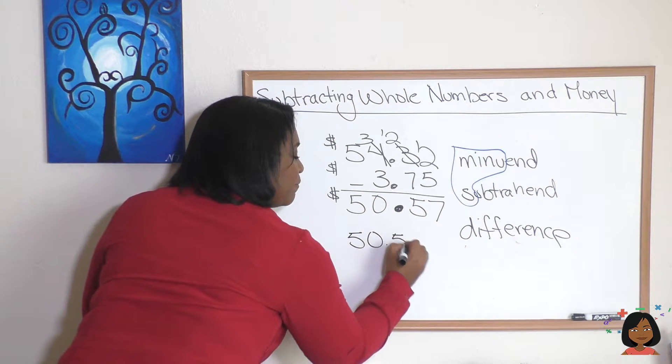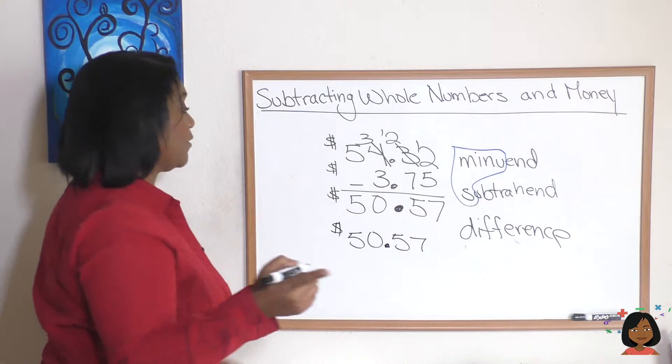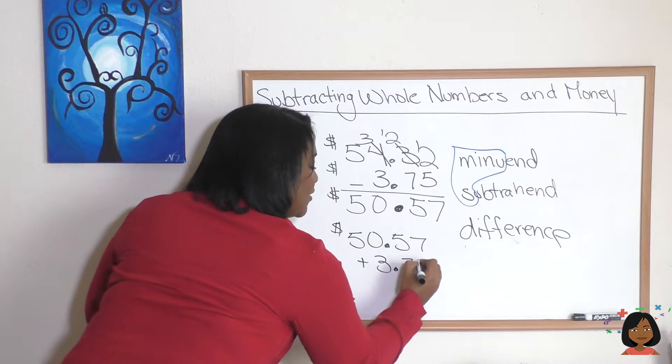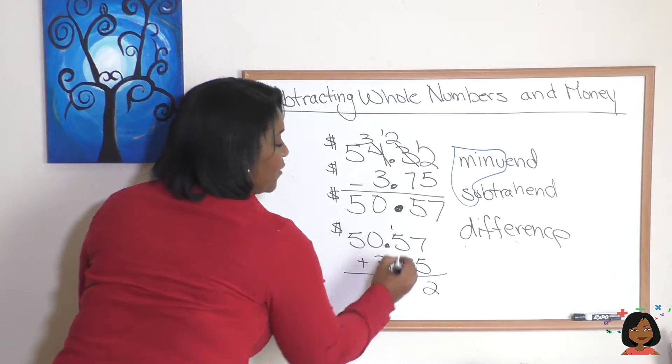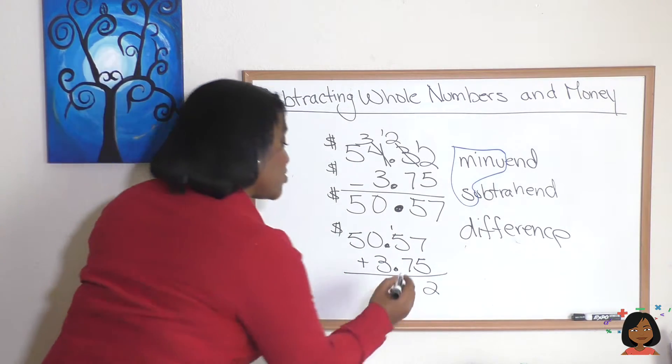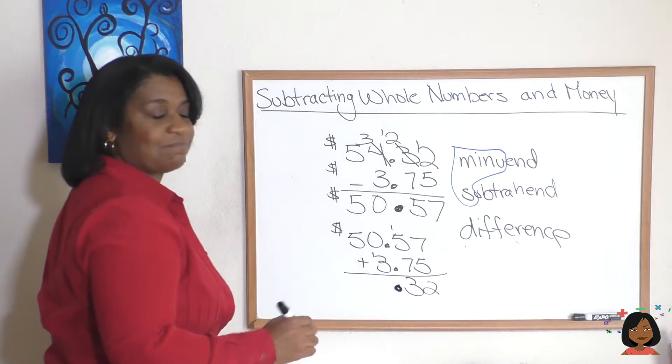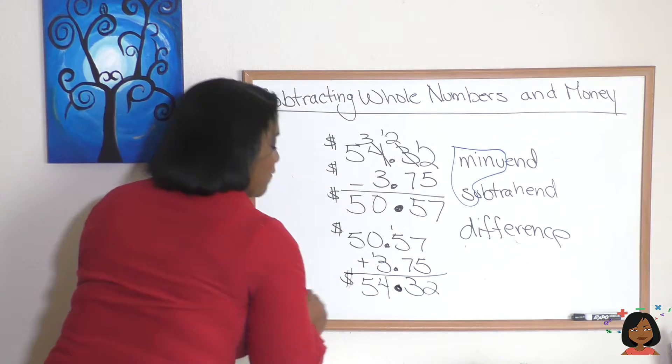I'm gonna rewrite my problem down here: fifty fifty seven, I'm gonna add three seventy five. Here we go, seven and five is twelve, and one is thirteen, and there is my decimal so I don't forget it. Keep it going, three and one is four and now we have our five. Don't forget our dollar sign.